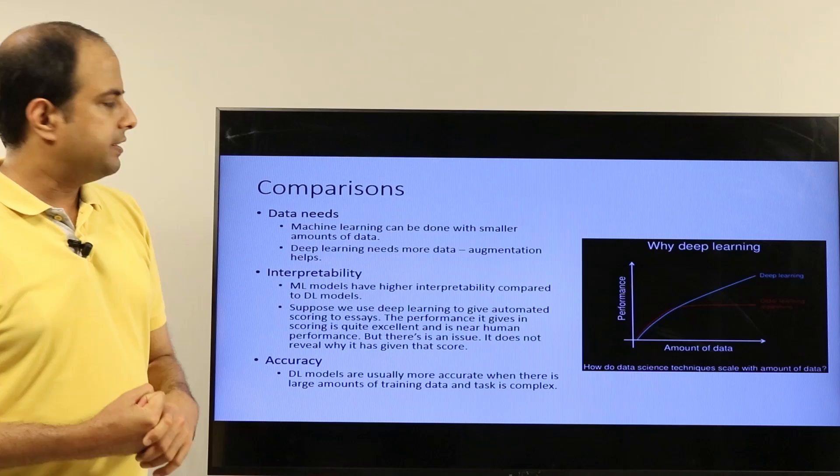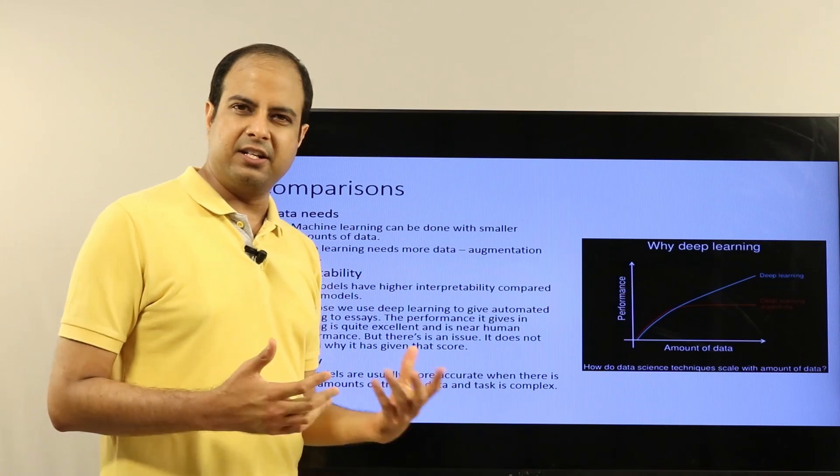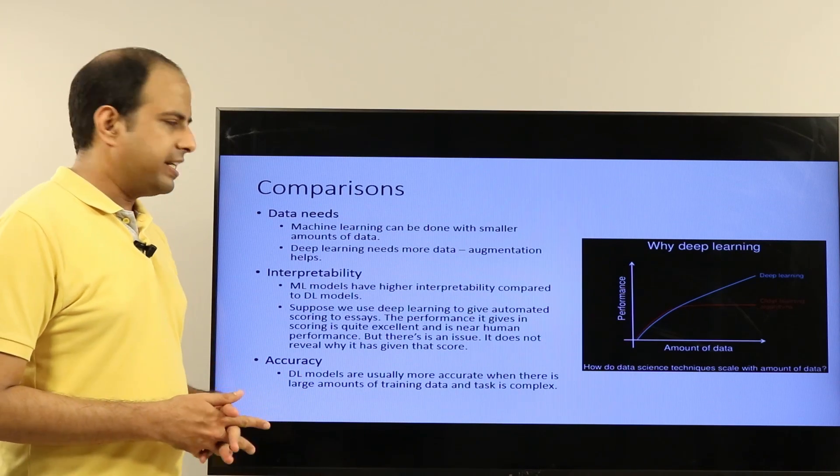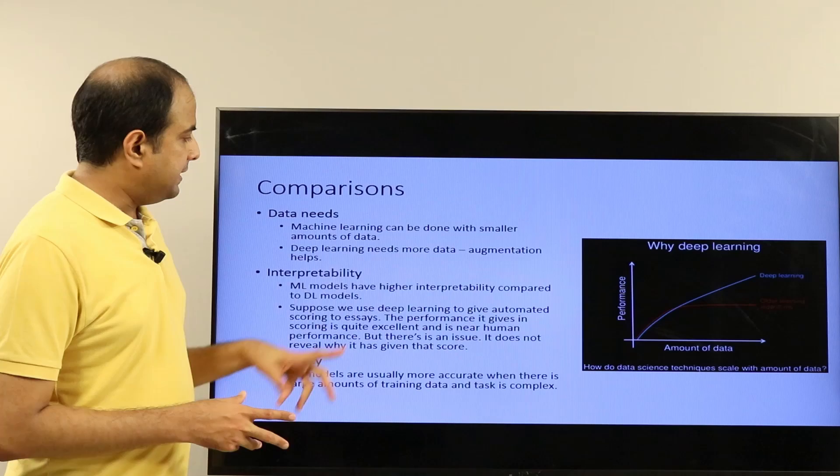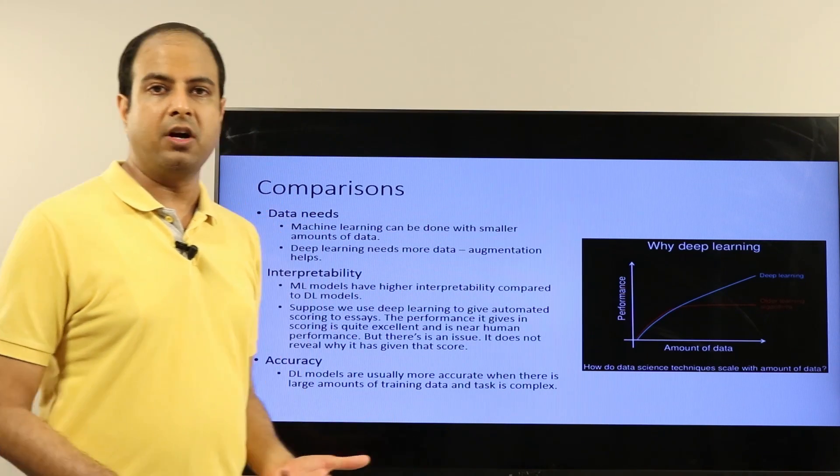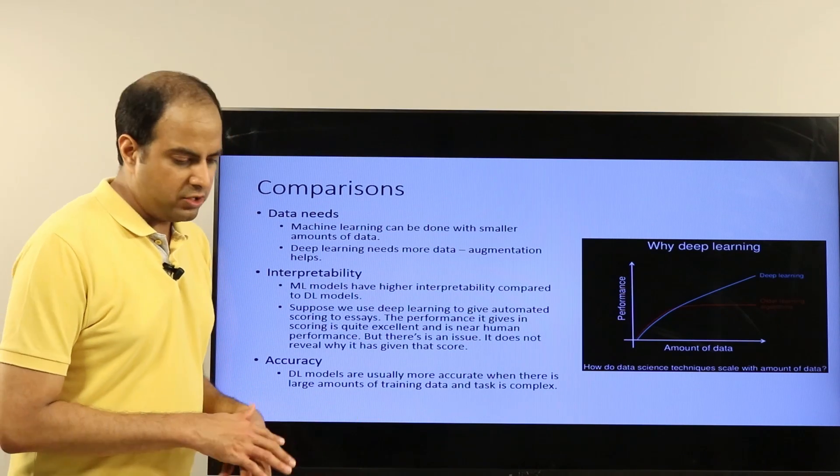When building a machine learning model, this can be done with smaller amounts of data—probably hundreds of instances per class for classification or a few hundred instances for regression. But deep learning needs much more data. Deep learning classifiers or models usually require thousands of instances at least. When you have small amounts of data there are ways of handling that, but broadly speaking deep learning models do need lots of data.